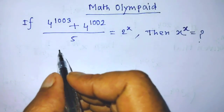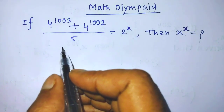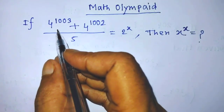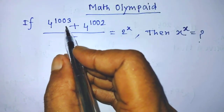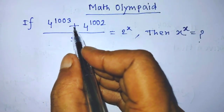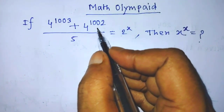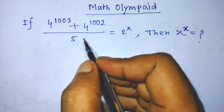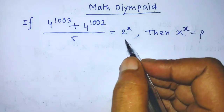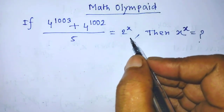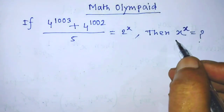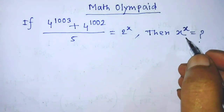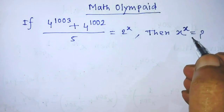Hello guys, you are welcome to solve this math problem: if 4 to the power 1003 plus 4 to the power 1002, over 5, is equal to 2 to the power x, then find the value of x to the power x.